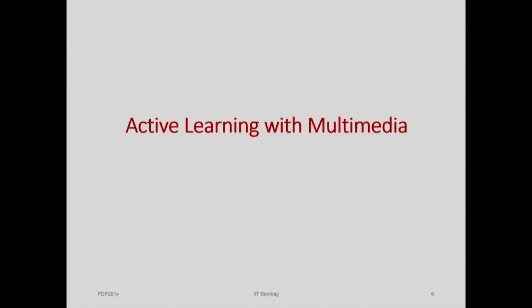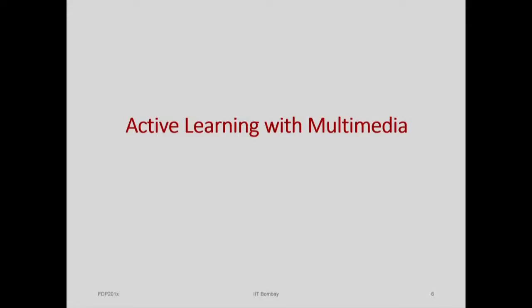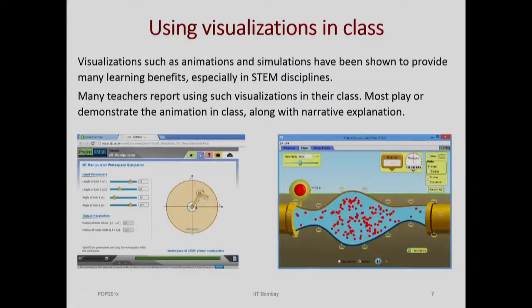The main question for today: now that there is a lot of multimedia content available, how do we do active learning with multimedia? When we talk about using visualizations in class, the picture on the left is a simulation from Project OSCAR — a simulation of a two-arm manipulator where students can manipulate variables. Another type is an animation on the right, showing flow of particles through a system, where the teacher explains what is happening. You may have other types of videos used along with teaching and learning.